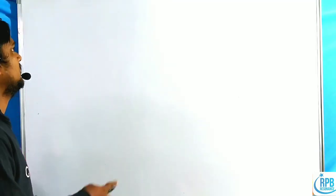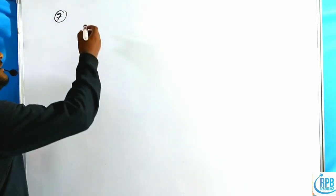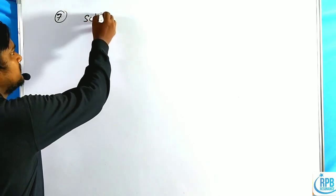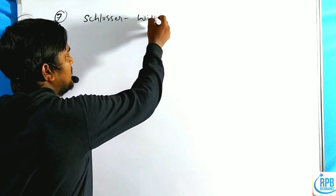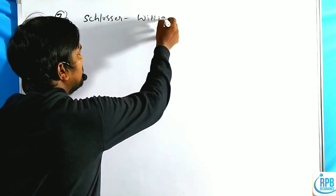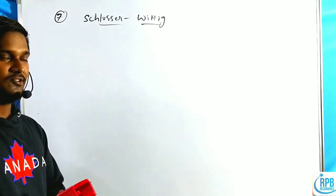Hi guys, welcome to RPP Resonance Chemistry. We are discussing another important lecture in advanced named reactions — lecture number 7. Previously we discussed the Wittig reaction and their continuations, parts A and B. Now here we are discussing the Schlosser modification of the Wittig reaction, which is why it is called the Wittig-Schlosser reaction or Schlosser-Wittig reaction.